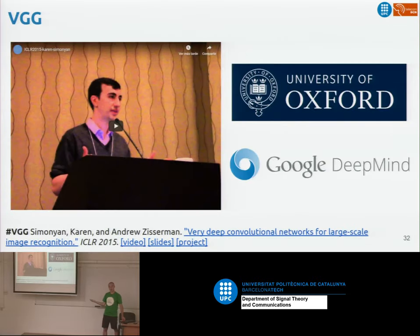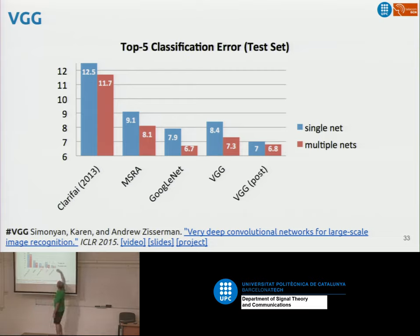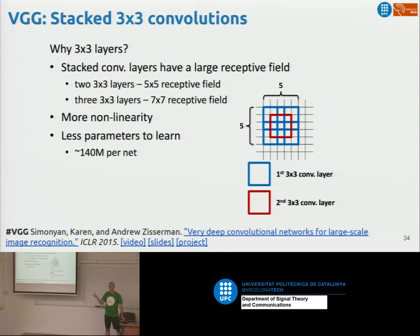There was another team — VGG from Oxford and Google DeepMind — whose results were comparable. At the challenge deadline, GoogLeNet had a 7.9% error rate and VGG had 8.4%, but after the deadline VGG managed to reduce it to 7%. What made VGG notable is that they used only three-by-three convolutional filters stacked together, giving the same receptive field with fewer parameters. VGG had 16 or 19 layers depending on the variant.